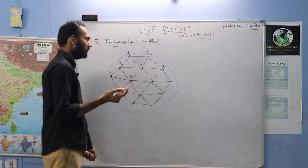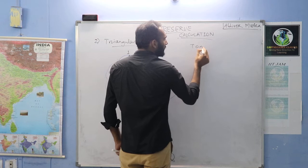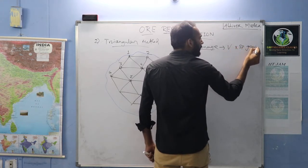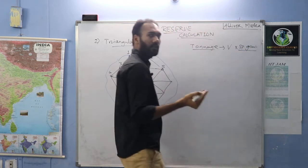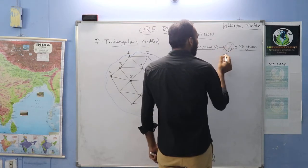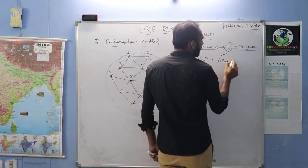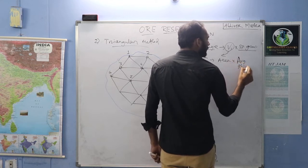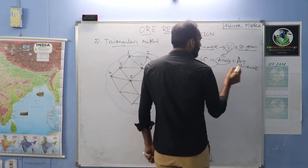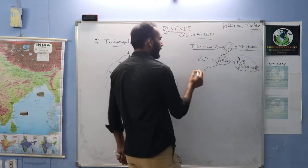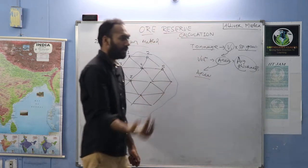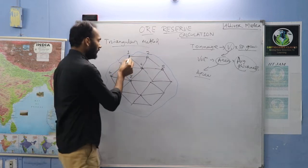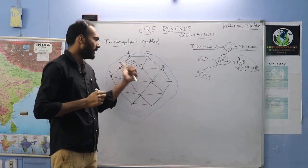To find out tonnage, the process is: tonnage equals volume multiplied by specific gravity or density. Specific gravity is given in the question. To find volume, you require area multiplied by average thickness. For area, in the case of the grid pattern we take the square or rectangle dimensions, but here it is a triangle, so you have to find the triangular area for each block.